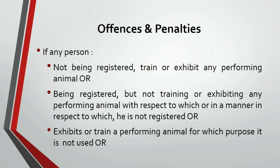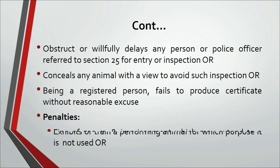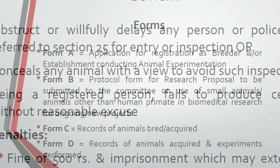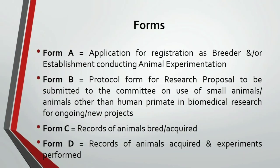For any kind of offenses there are penalties. Offenses include performing experiments without registration, or doing experiments or activities for which you are not licensed, willfully stopping any person or officer from entering premises for inspection, concealing animals to avoid such inspection, or being a registered person who fails to produce their certificate without reasonable excuse. The penalty is a fine of 500 rupees, or imprisonment which may extend up to three months, or both. With this, we have finished the Prevention of Cruelty to Animals Act.